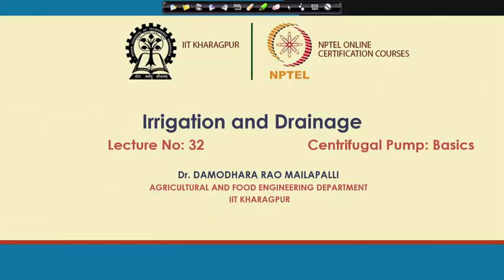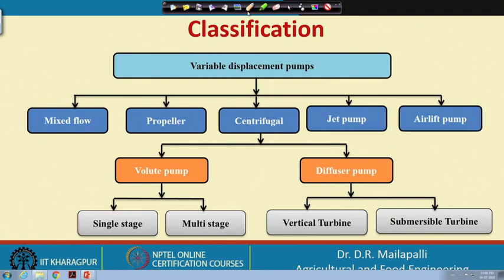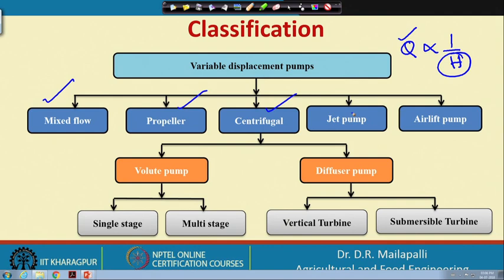This is lecture number 32, focusing mostly on centrifugal pumps. Centrifugal pumps are part of variable displacement pumps, where the discharge Q varies inversely — if you go deeper to get the same discharge, the discharge is going to be less. Variable displacement pumps are classified as mixed flow, propeller, centrifugal, jet pump, and lift pump.